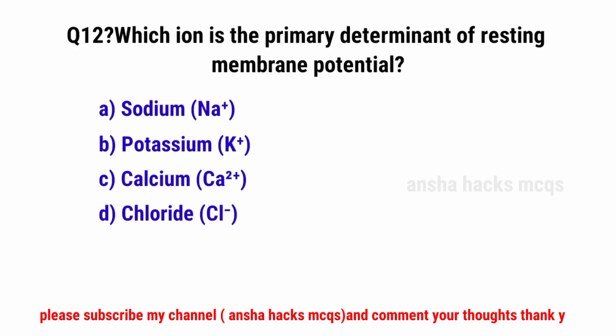Question No. 12. Which ion is the primary determinant of resting membrane potential? The correct option is B: Potassium.